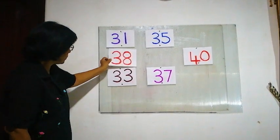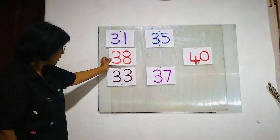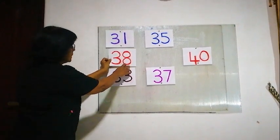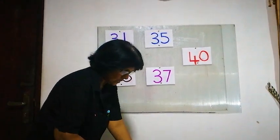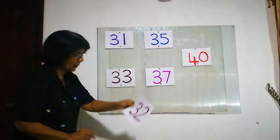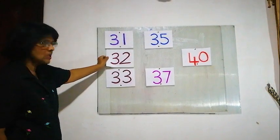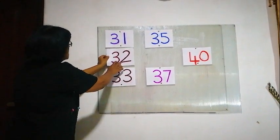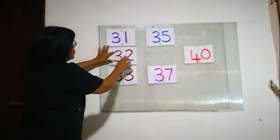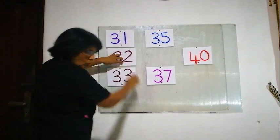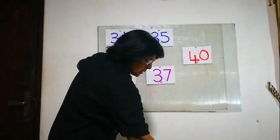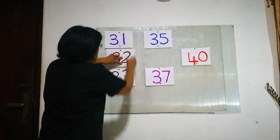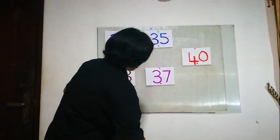Is this 32? No, this is 38. Is this 32? Yes, this is 32. 3, 2 — this is correct. Fix it here, 32.